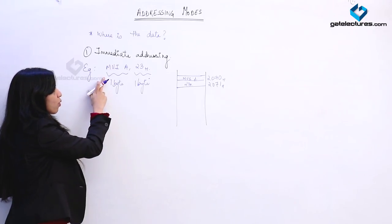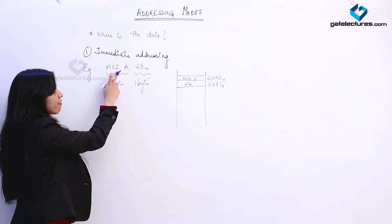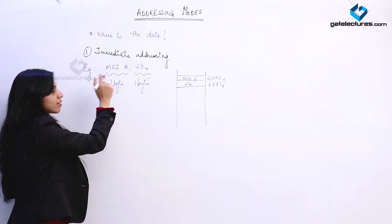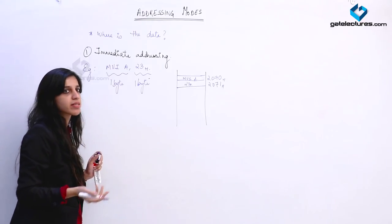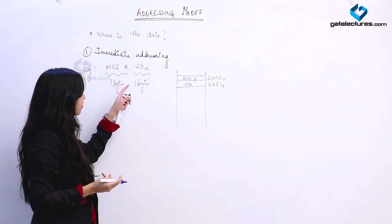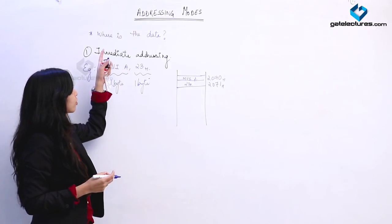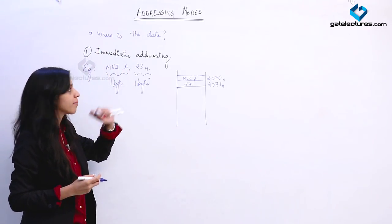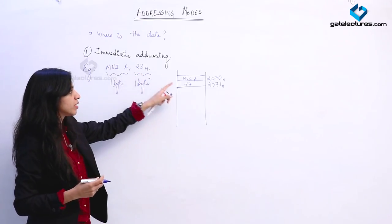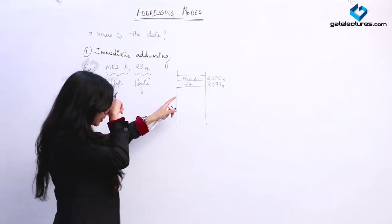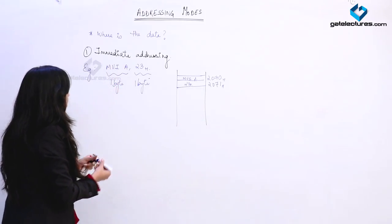When you decode this opcode MVI A, when you are trying to execute it, the microprocessor knows that some data has to be loaded into the accumulator, loaded in register A. Then the microprocessor asks: where is the data? In immediate addressing, the data is going to be located in the immediate next memory location, which is 2071. So here is the data.